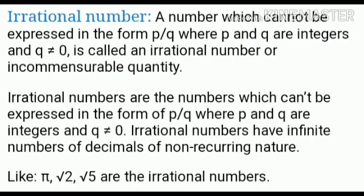Before starting question number 6, let's recall irrational numbers and surds. Irrational numbers are numbers which cannot be expressed in the form of P upon Q, where P and Q are integers. In simple language, non-perfect squares and non-terminating, non-recurring decimals are called irrational numbers.